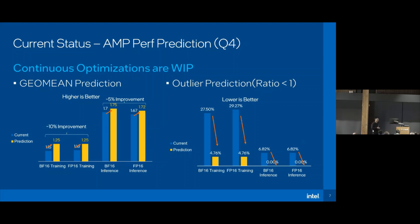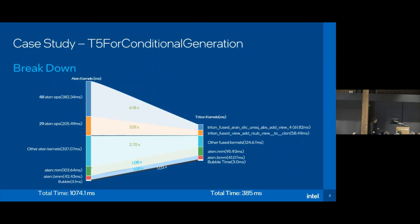We have finished the first round of performance analysis for the outlier models. We also want to understand where the performance improvement comes from, from both software and hardware perspectives. We take a case study for T5 for conditional generation. From the software perspective, we use the PyTorch profiler to get a performance breakdown, comparing the Triton kernel against its ATen operations counterpart.